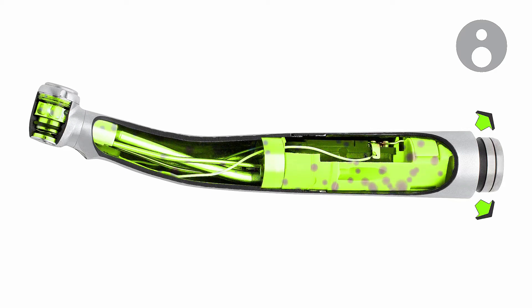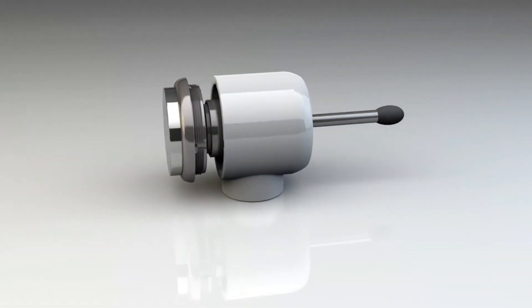Air-driven dental handpieces contain an air turbine in the head. When compressed air delivered through a tube is forced through the blades of the turbine, the movement of the turbine converts that air pressure into the rotational force that makes the chuck, which holds the cutting burr, spin.